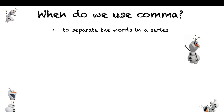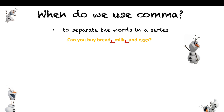We use a comma to separate the words in the series. What are series? A group of words that have something in common. Like in this sentence: Can you buy bread, milk, an egg? These are three things that you can buy from the shop. You will use the comma to separate them. The last comma comes before the word 'and'.